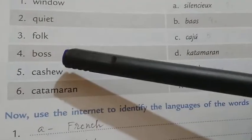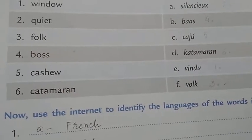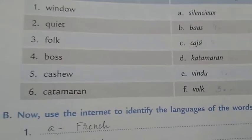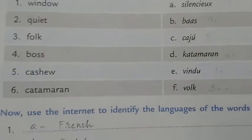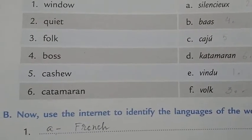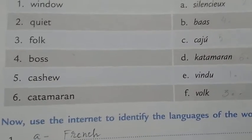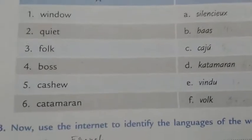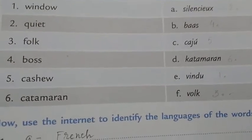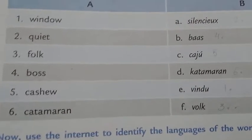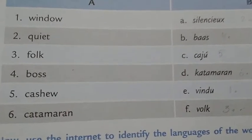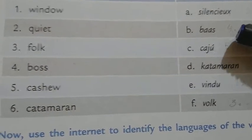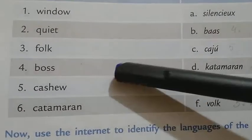Number four is 'boss.' Boss is a person who is in charge of a work or organization. Boss is a master — to avoid the harshness of the word 'master,' the word 'boss' is used usually. The original word for boss is 'baas,' B-A-A-S. It also sounds like the same.